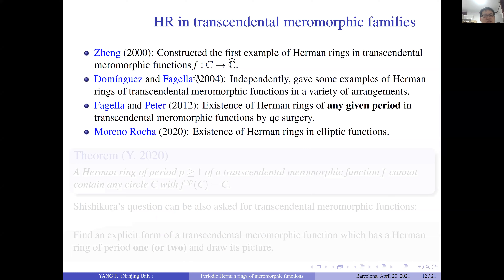The second part is about transcendental meromorphic functions. The first example of a Herman ring was constructed by Professor Zeng Jianhua, and independently the Herman ring of meromorphic functions was also constructed by Petersen and Lliure. Then Lliure and Fagella proved the existence of Herman rings of any period in transcendental meromorphic functions by quasi-conformal surgery.